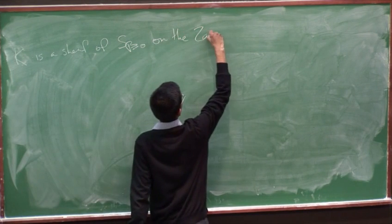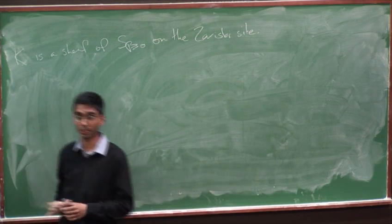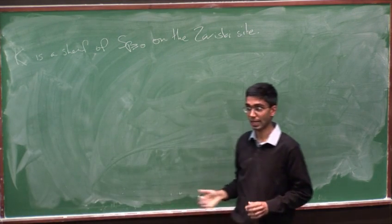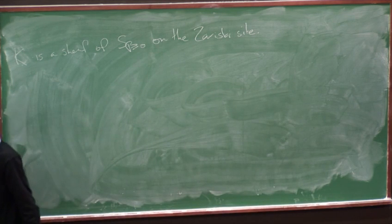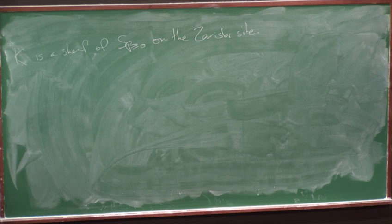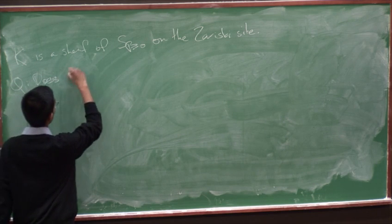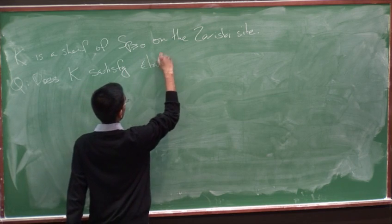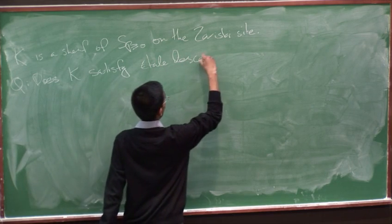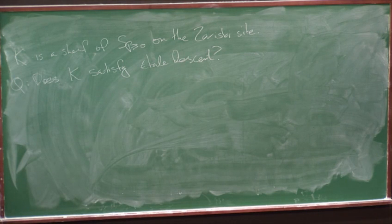Now, the Zariski site of the scheme X is generally too coarse, as we know, to be useful to have a good analogy with algebraic topology. We should really be working with the étale site. So we've said that K-theory has the Zariski descent property, and that raises a natural question: does K-theory have étale descent? So if K-theory satisfies étale descent, then we can hope for an analogy with, for example, topological... Yes?